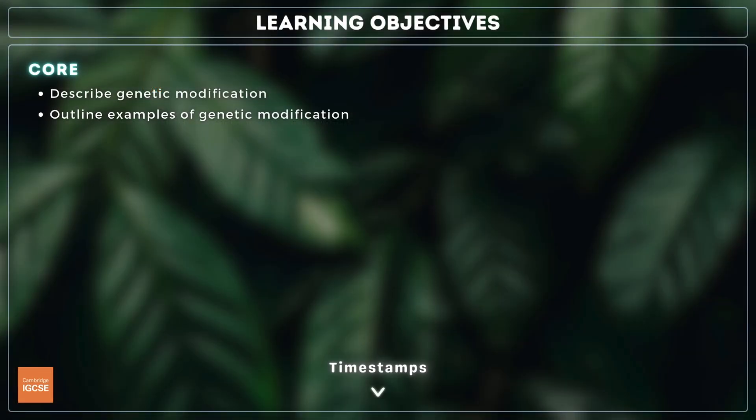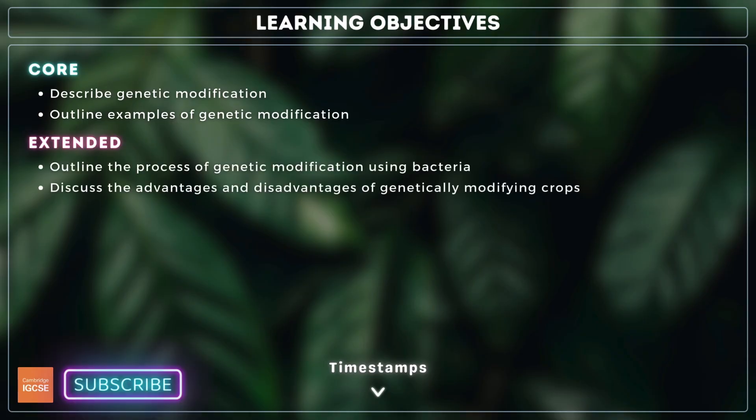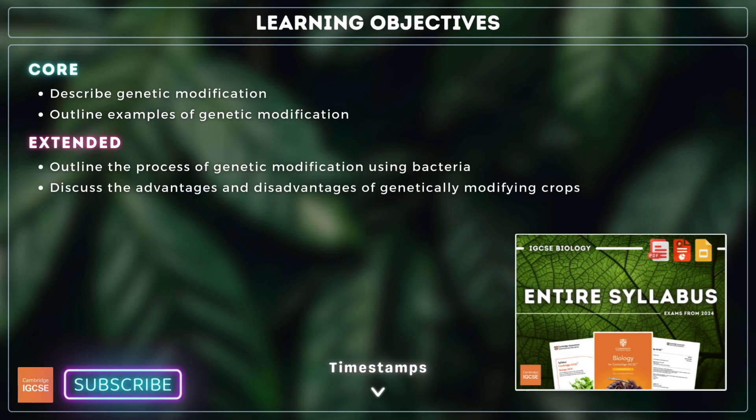you need to describe and outline examples of genetic modification, and for extended, outline the process of genetic modification using bacterial production of a human protein as an example, and discuss advantages and disadvantages of genetically modifying crops. If you're interested in using the slides you see in my videos adapted for the classroom, you can find a link to my resource store in the description.